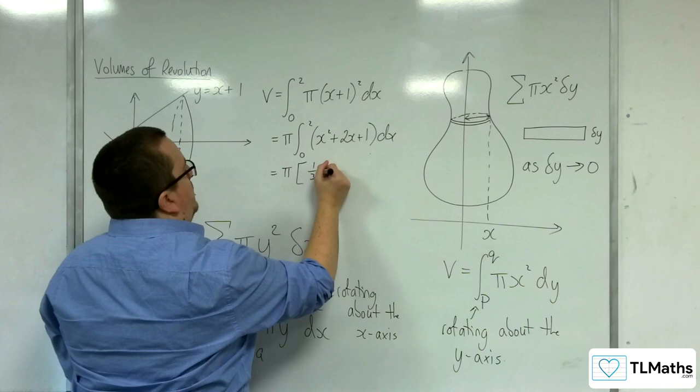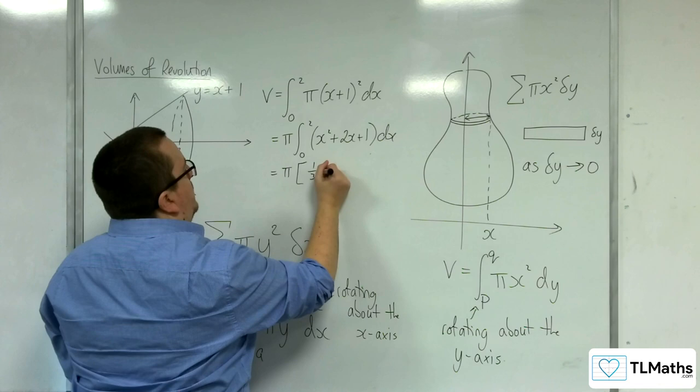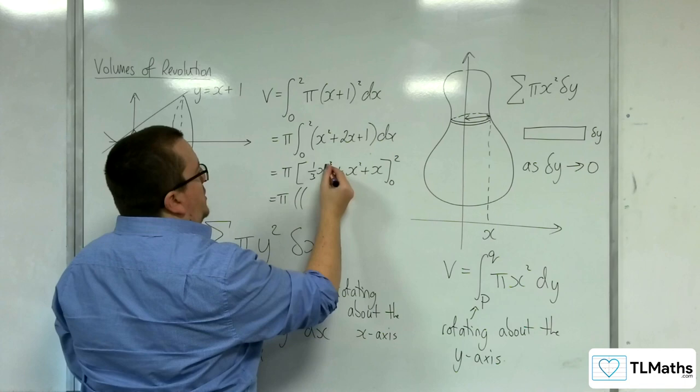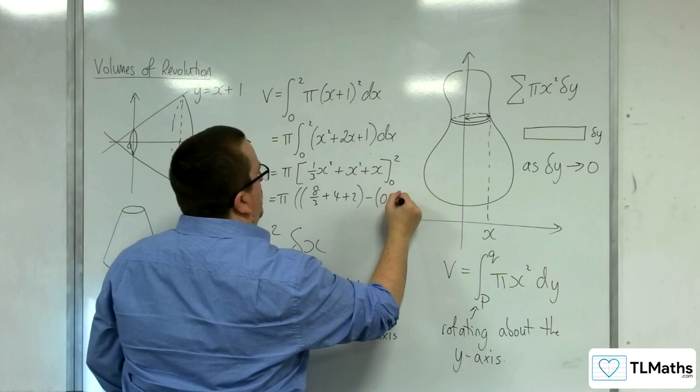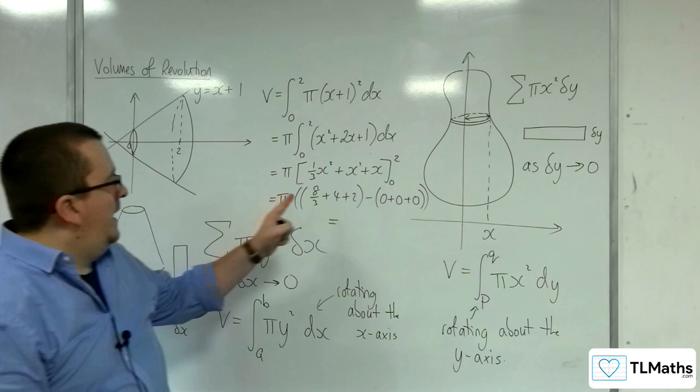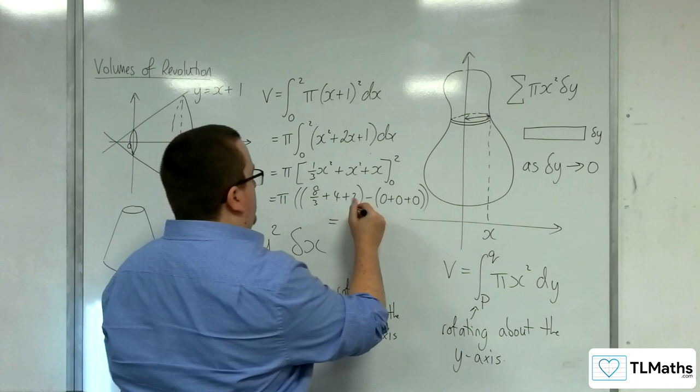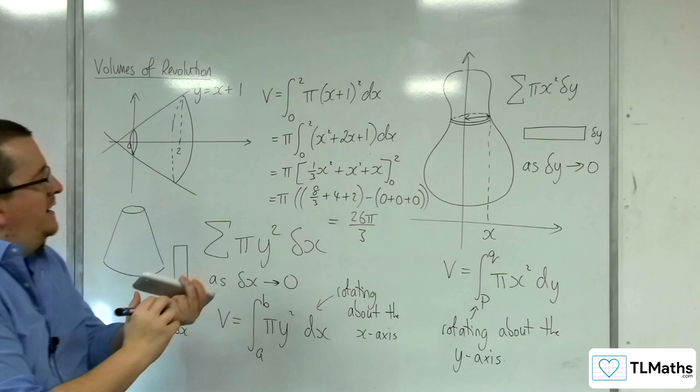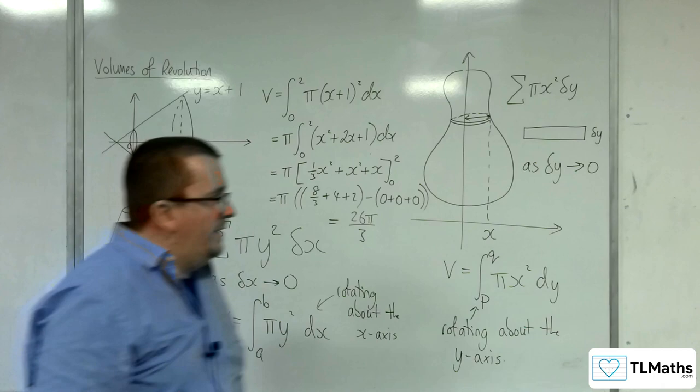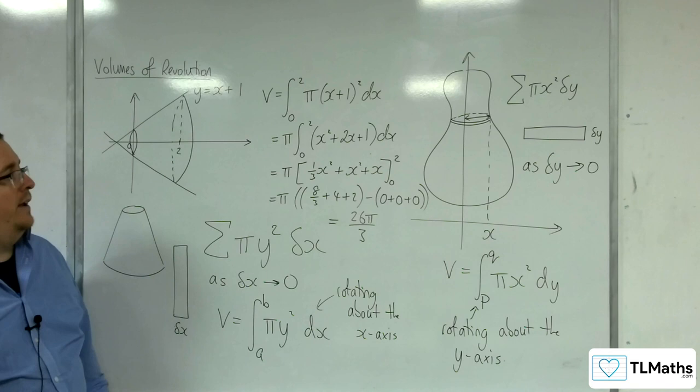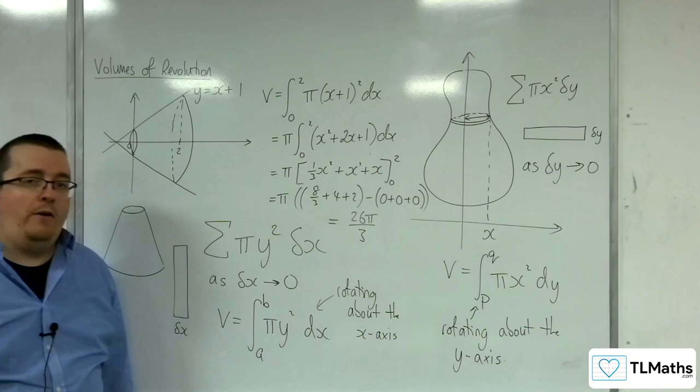So, add 1 to the power divided by the new power. 2x goes to x squared and that goes to x and evaluate it between 0 and 2. So, we would get 8 thirds plus 4 plus 2 and then take away 0 plus 0 plus 0. And so, we get 8 thirds plus 6, well just add those together we've got 8 thirds plus 6 and that gets us 26 thirds so 26 pi over 3 and that is the exact volume of this shape. So, that is how it works in practice and what we're going to be doing is looking at some examples of rotating about the x-axis and rotating about the y-axis.